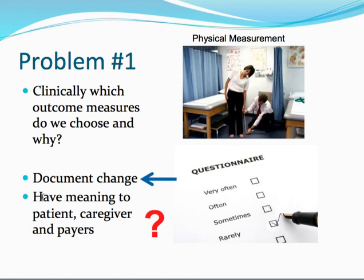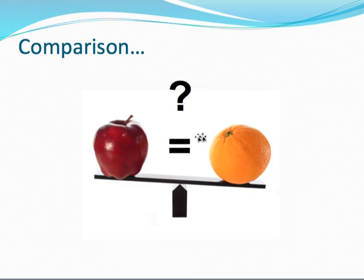We also want scales that have meaning to the patient, the caregiver, the clinician, and the payers — we want everybody to think that the scale has relevance. So what we're looking for is comparisons on items like responsiveness and validity. Responsiveness has to do with how well the scale will pick up change, and we're going to use something called the minimal clinically important difference to determine how responsive it might be.